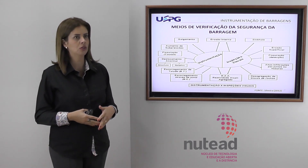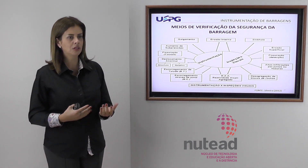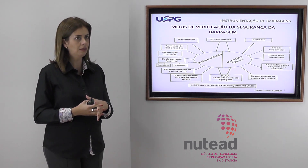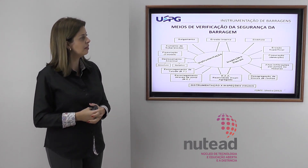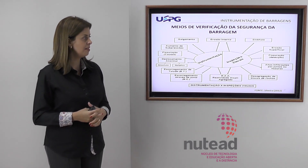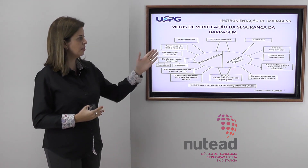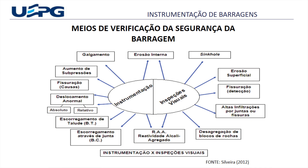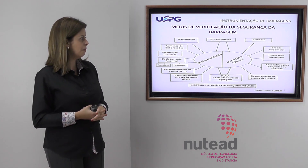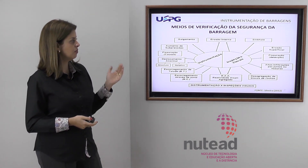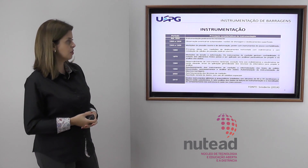Hoje, com o advento da tecnologia, muitas vezes a gente tende a querer substituir o olho humano para detectar possíveis falhas, mas a inspeção visual é necessária. Vários tipos de problemas que podem gerar acidentes são percebidos em inspeções visuais. A instrumentação também auxilia em galgamento, erosão interna, fissuração, e diversos tipos de problemas em estruturas de barramento. Sempre num processo de monitoramento, teremos instrumentação associada a inspeções visuais.